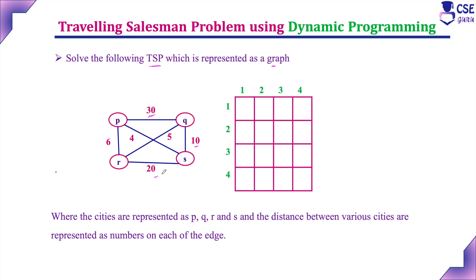The first step is to consider the cost adjacency matrix for this given graph. Vertex P will be considered as 1, Q as 2, R as 3, and S as 4. Usually the first vertex is considered as the starting vertex, so it is vertex 1. For easy implementation, we will label the vertices as 1, 2, 3, and 4, and now we will fill the cost adjacency matrix.